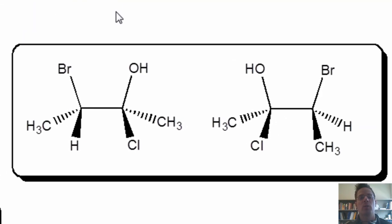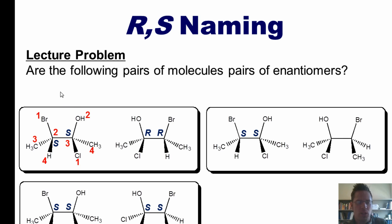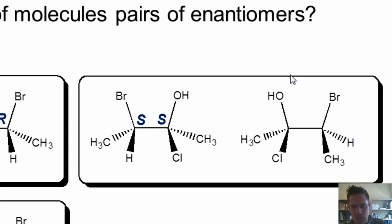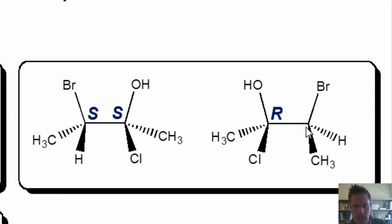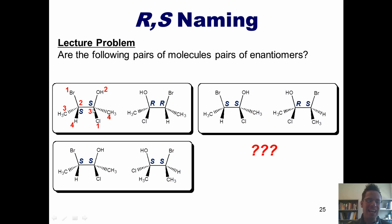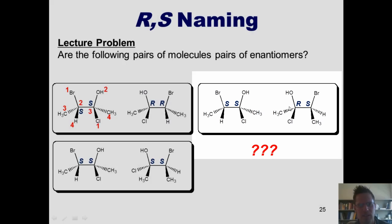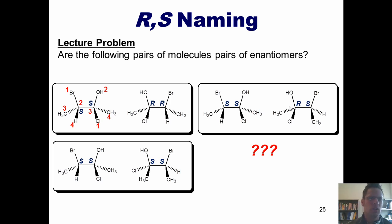Let's look at the molecules at the upper right. Going through the same process, the stereocenter at left is S and the stereocenter at right is S — this molecule is the same as the SS molecule we already identified. Now for the other molecule, going through the same process, the stereocenter over here is R and the stereocenter here is S. So what are these two molecules to each other? One is SS and the other is RS — they are kind of half opposite and half the same, so they aren't enantiomers. We call these diastereomers.